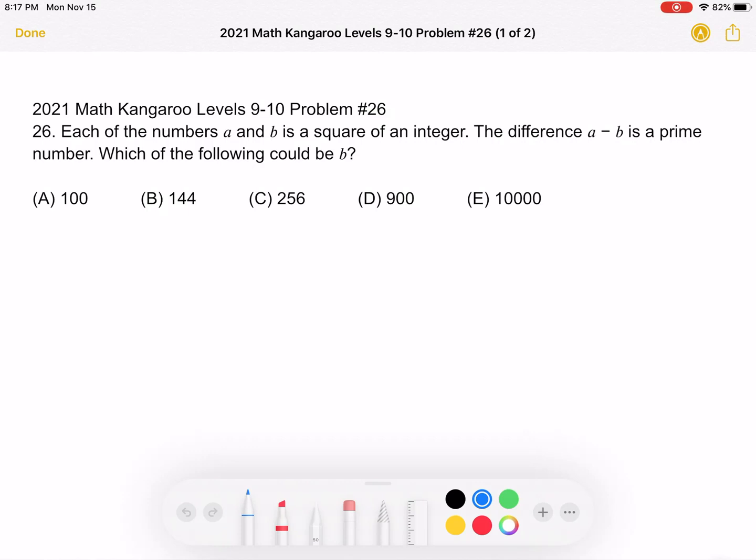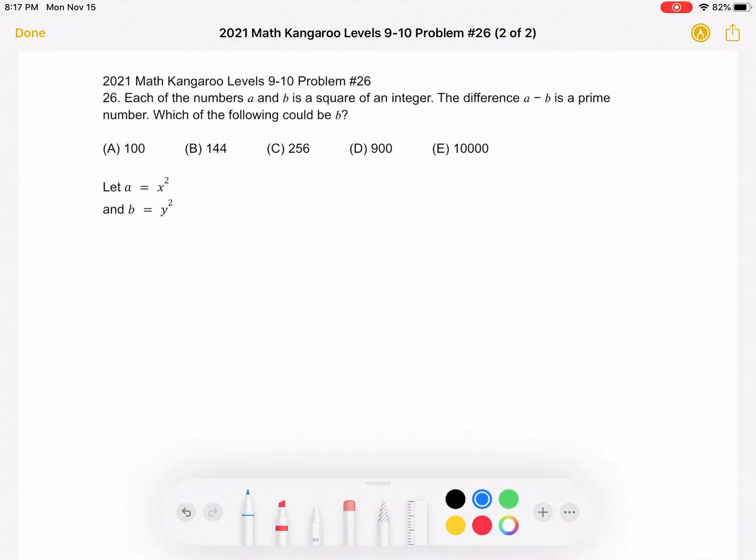This is the problem as it originally appeared on the test and here is where we'll be doing the solution. To start, we know that A and B are both squares of integers. So let's let A be equal to x squared and B be equal to y squared.